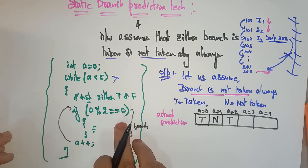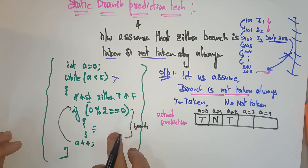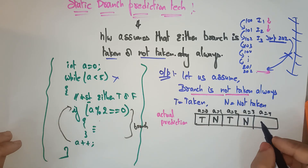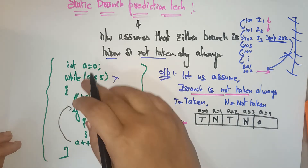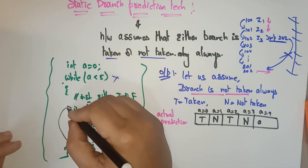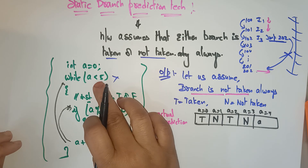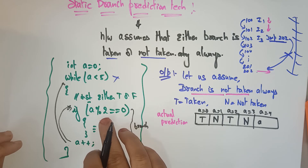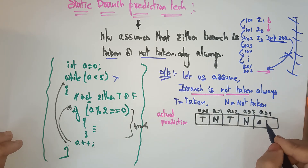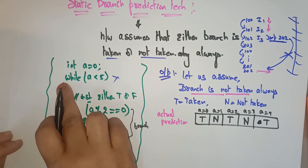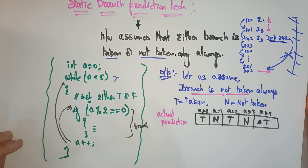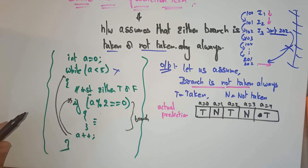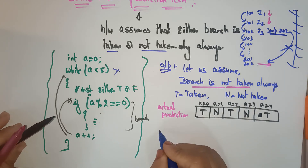Now a = 3: 3 modulo 2 is not equal to 0 — not taken. a incremented to 4. 4 less than 5 — enter loop. 4 modulo 2 = 0 — true, branch taken. a incremented to 5, go back. Check: 5 less than 5 — false, condition not satisfied, doesn't enter the loop. This is the actual prediction: T, N, T, N, T.